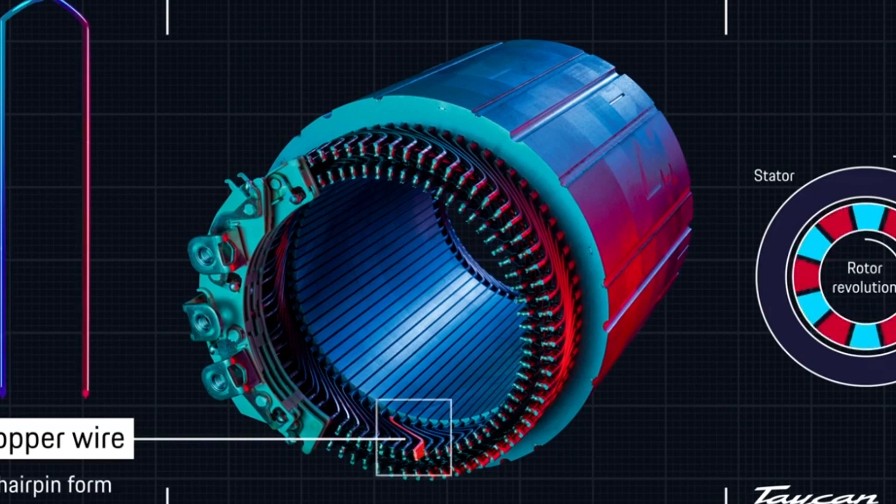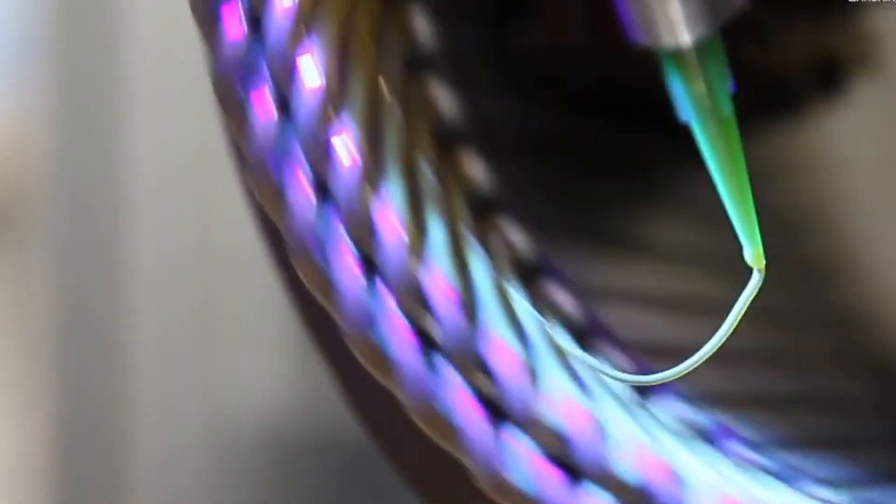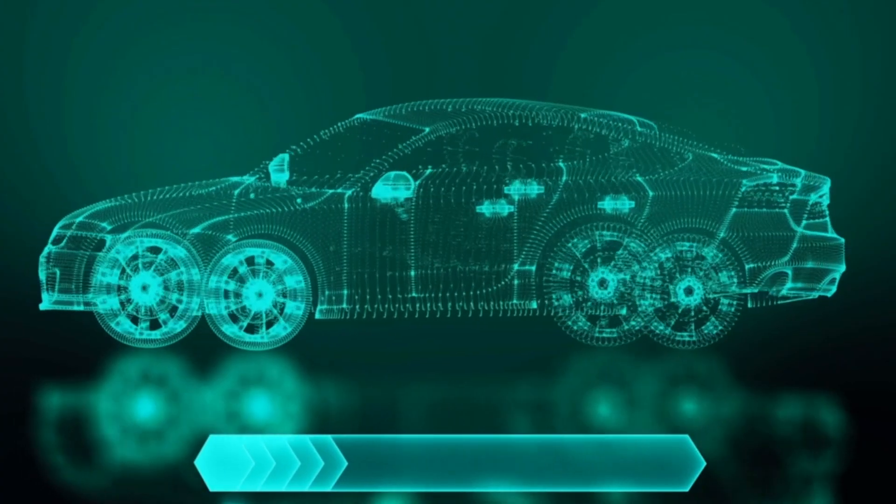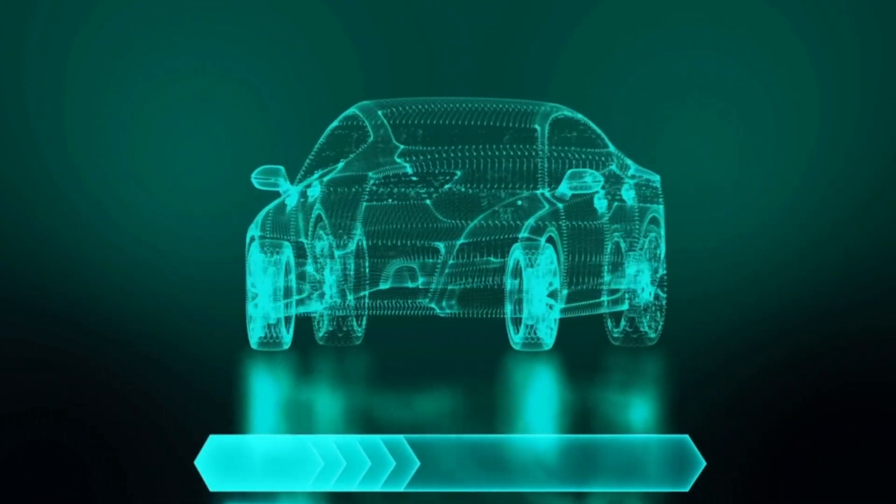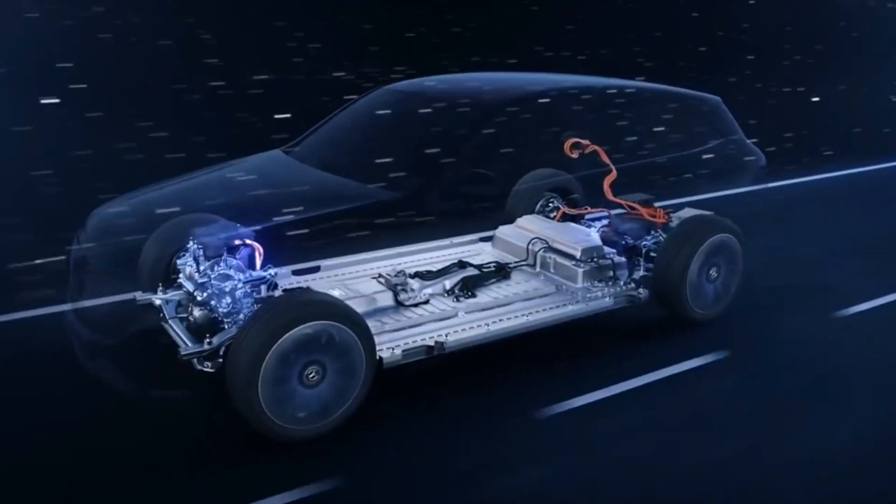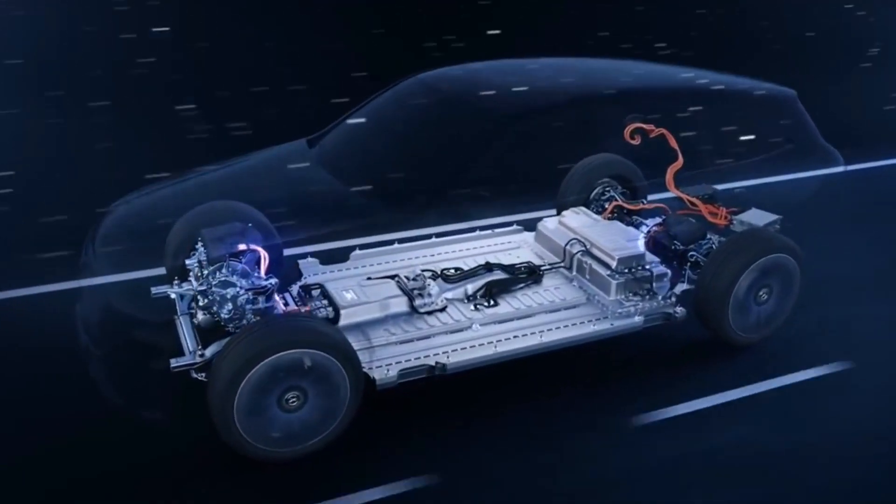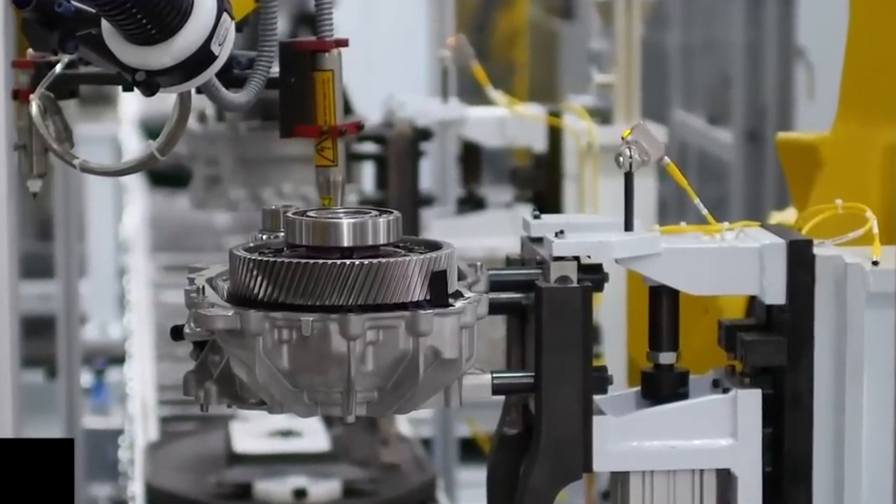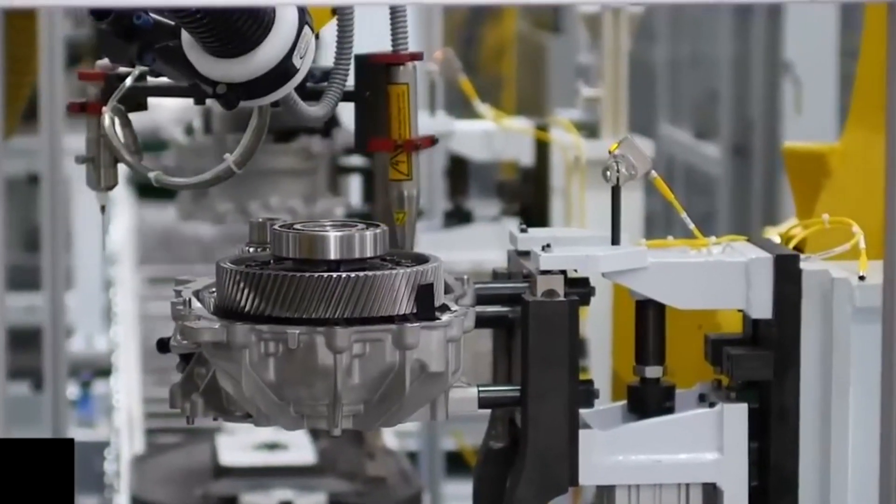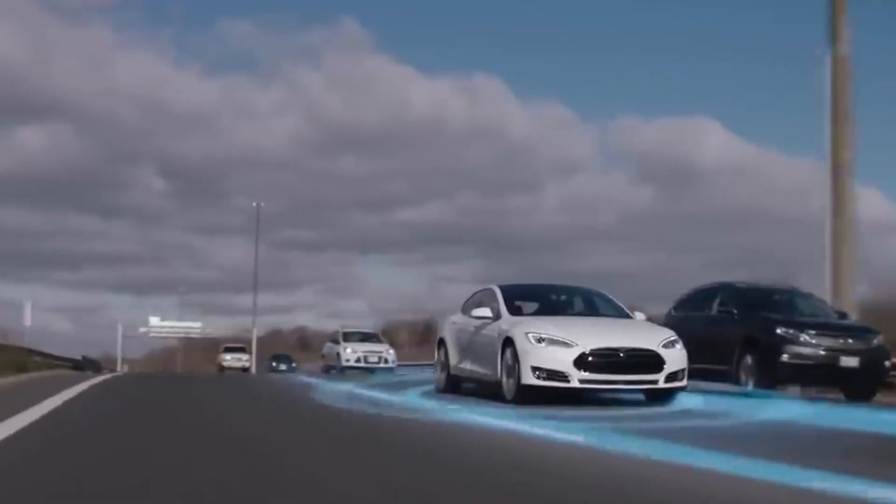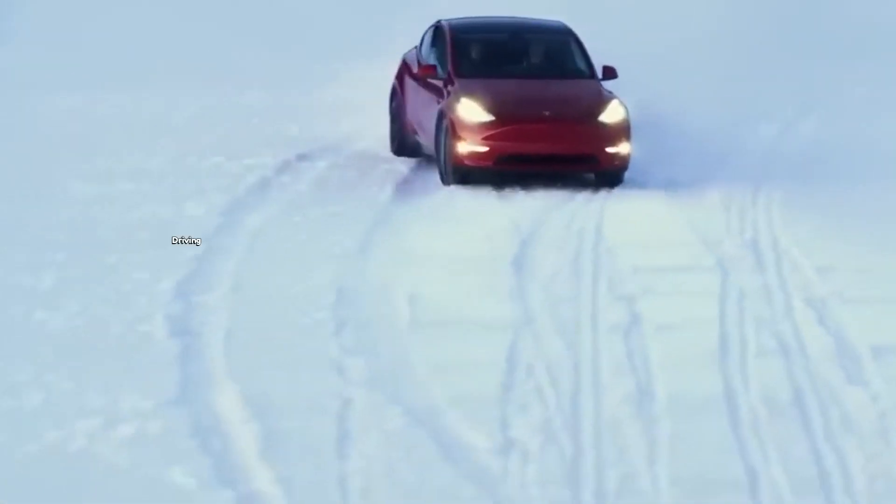With hairpin technology, a smaller slot size can be used to effectively reduce the motor's cogging torque and electromagnetic noise. This is because the hairpin design allows for a better distribution of the magnetic flux in the stator, resulting in a smoother torque output and less noise during operation. Additionally, the use of flat copper wire instead of round wire further reduces electromagnetic noise by minimizing the air gaps between the wire and the stator teeth. This is important for electric vehicles, where minimizing noise and vibration is crucial for a comfortable driving experience.